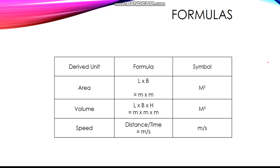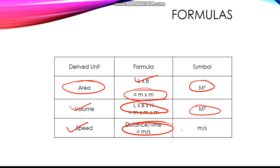Here are some major formulas used to define the derived units. For area, L into B, which is meter into meter equals meter square. Volume: length into breadth into height, meter into meter into meter, which is meter cube. And speed: distance upon time, which is meter per second.